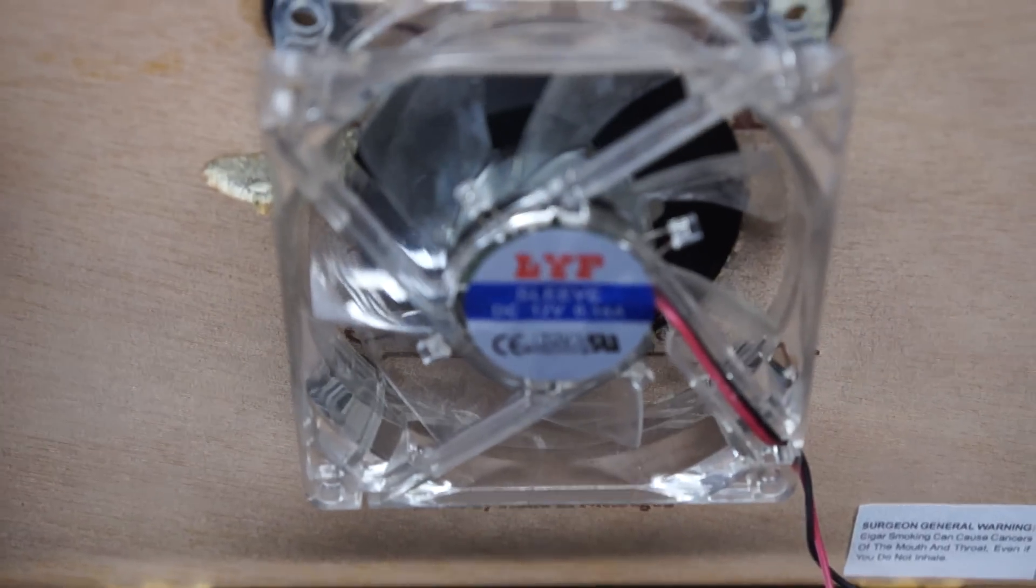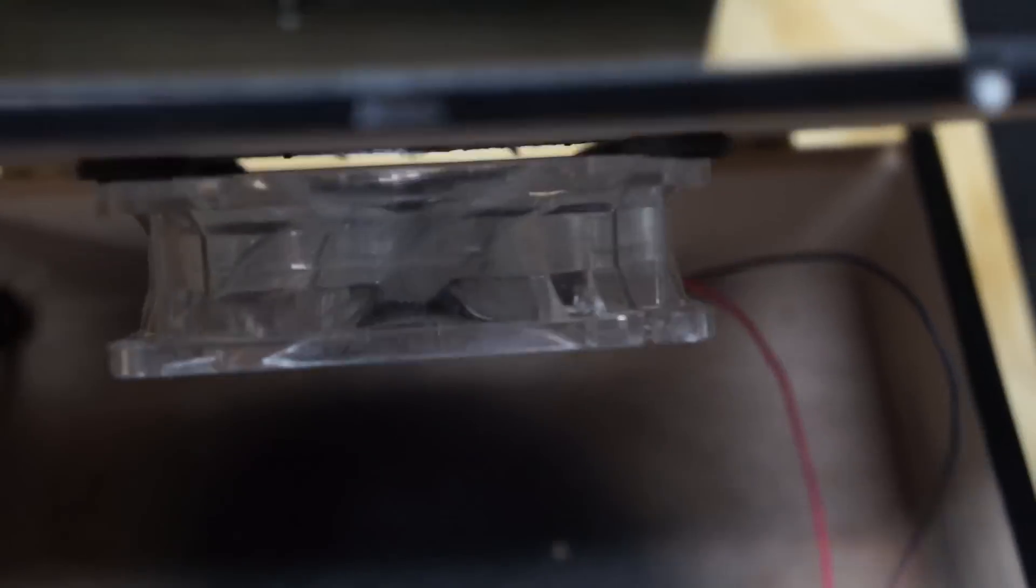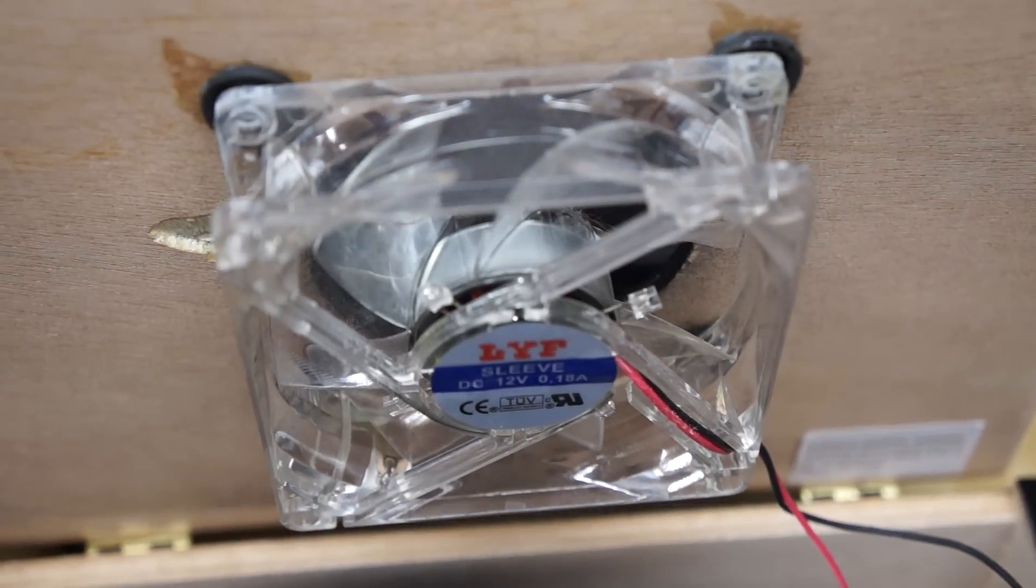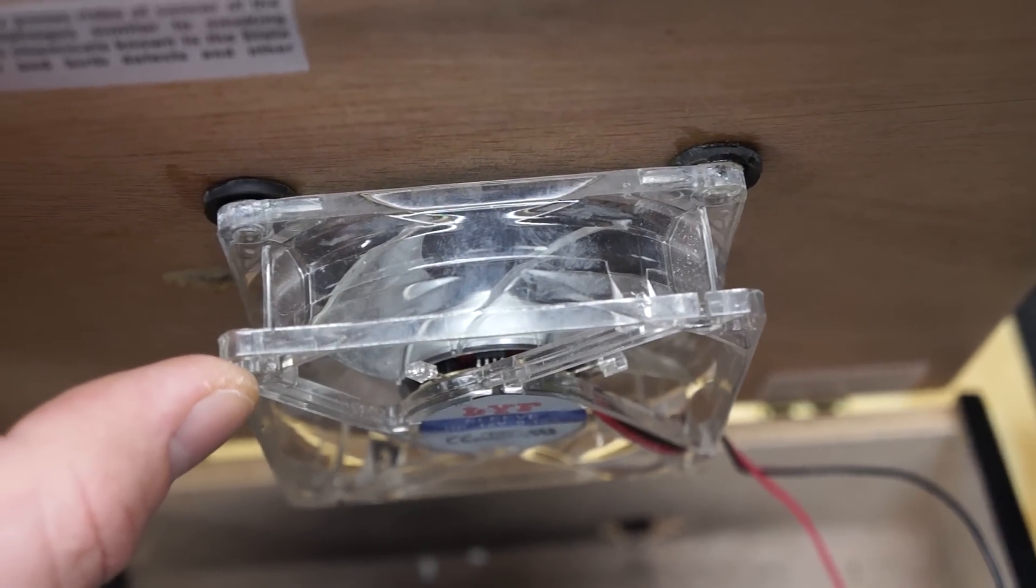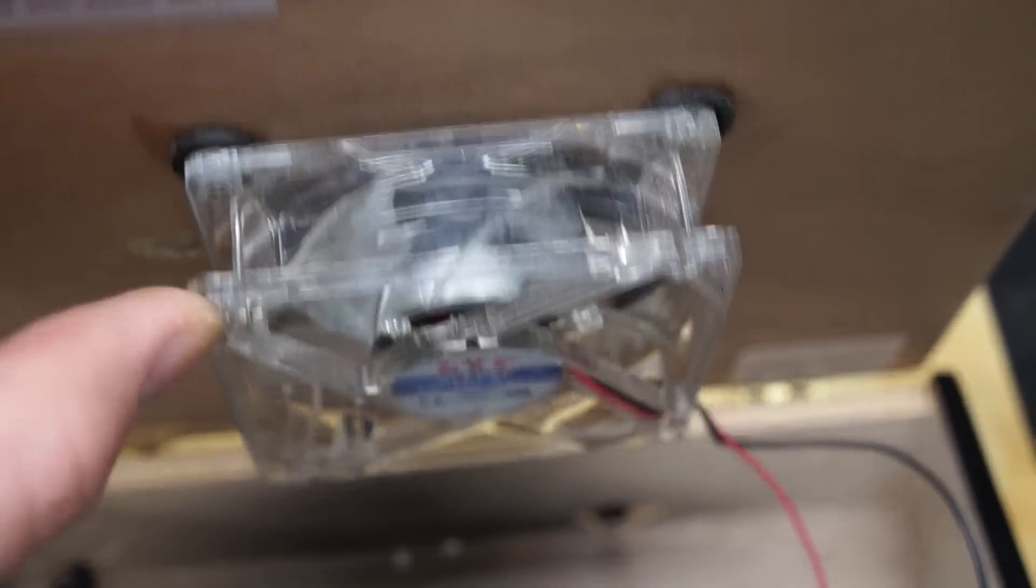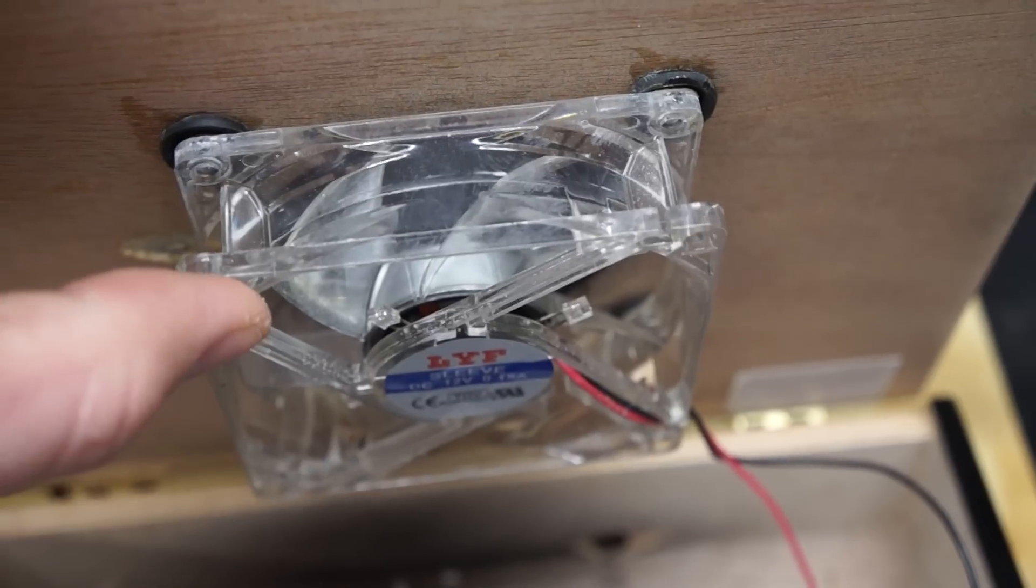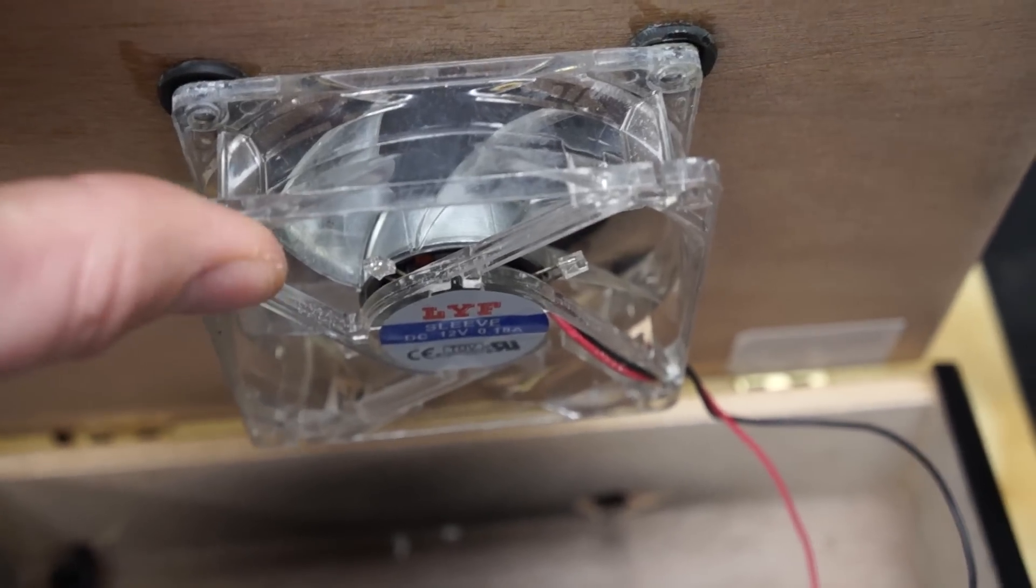Now I take my PC fan and I mount it to the back of the lid for the cigar box. I use these little rubber grommets—you can probably see I use these little rubber grommets and I just glue the fan directly to those rubber grommets. Gives a little bit of absorbency for the vibration, works just fine.